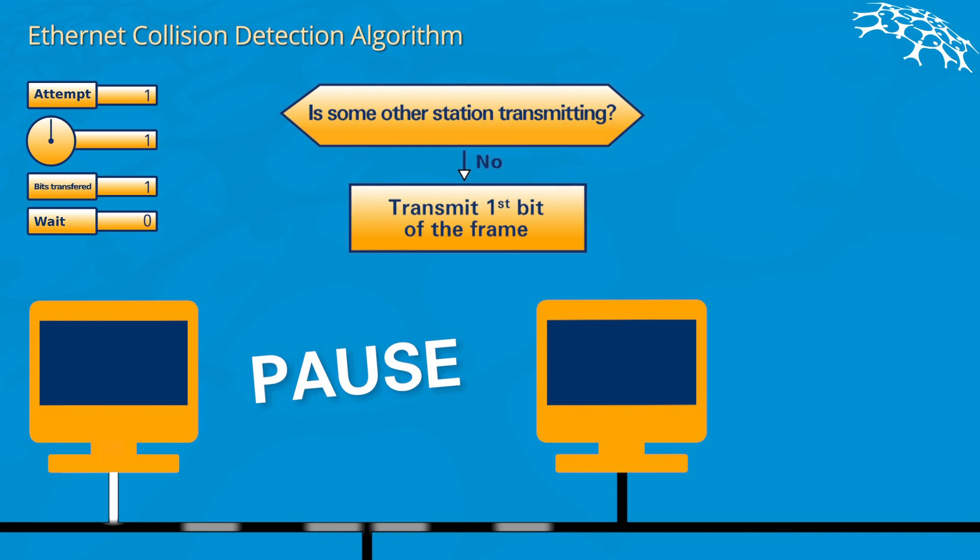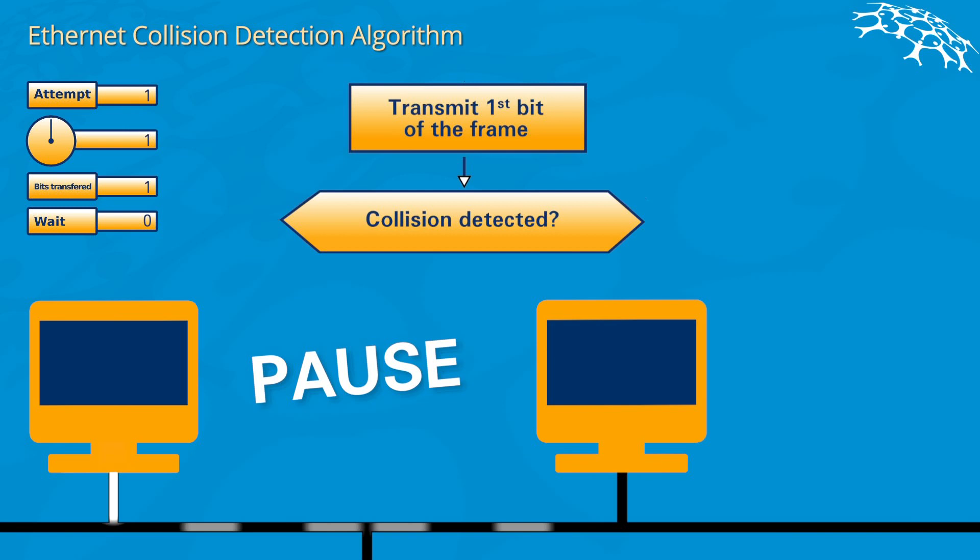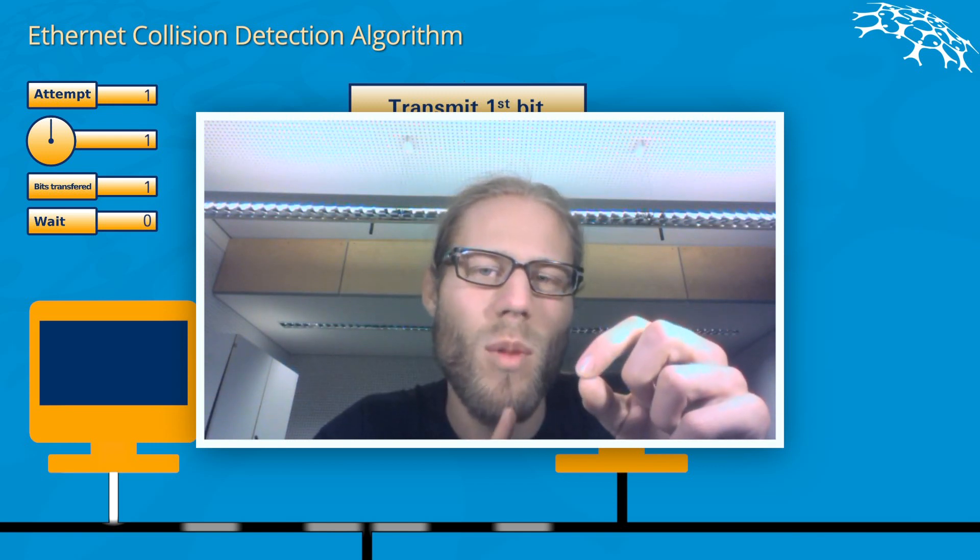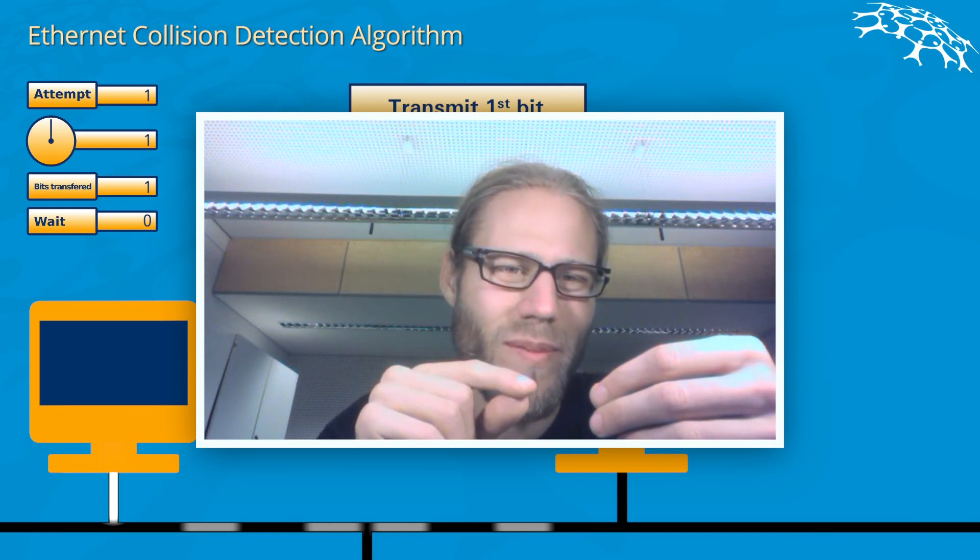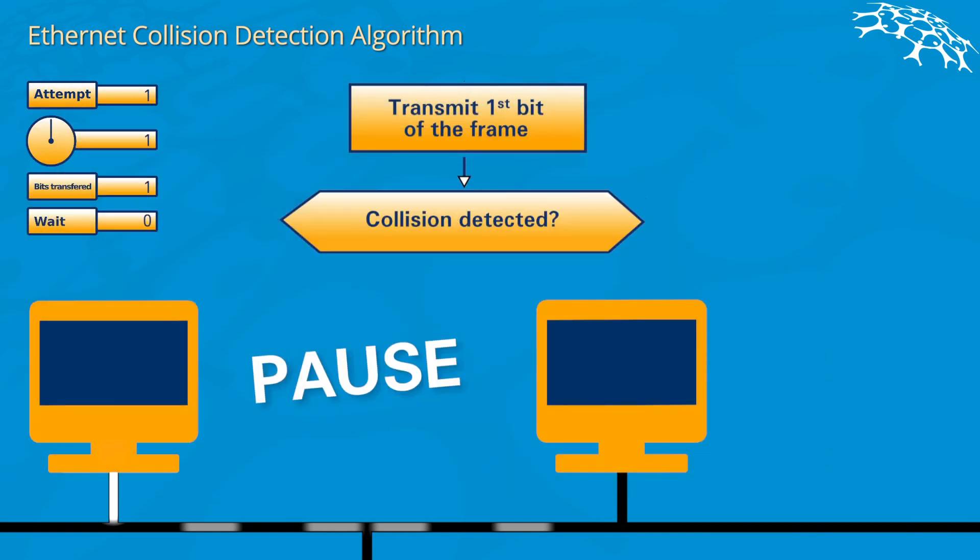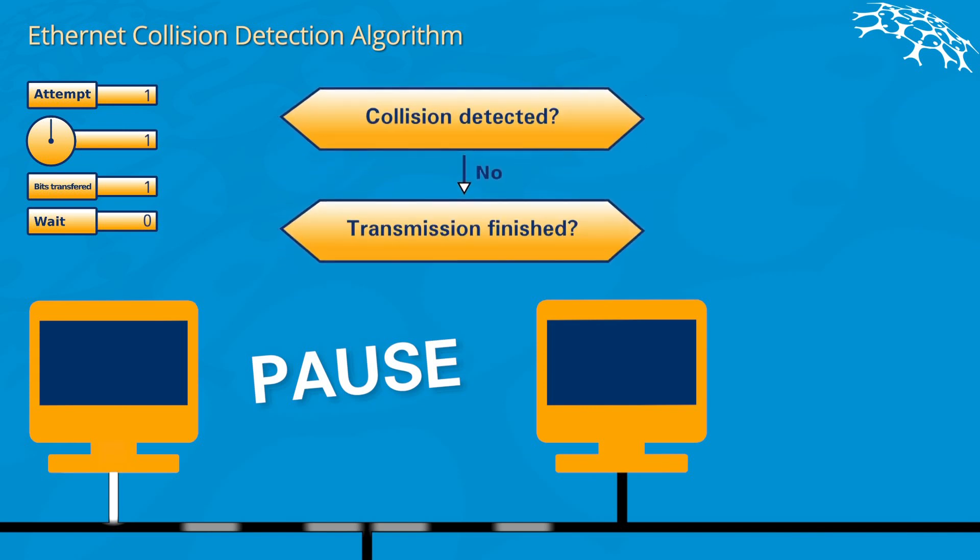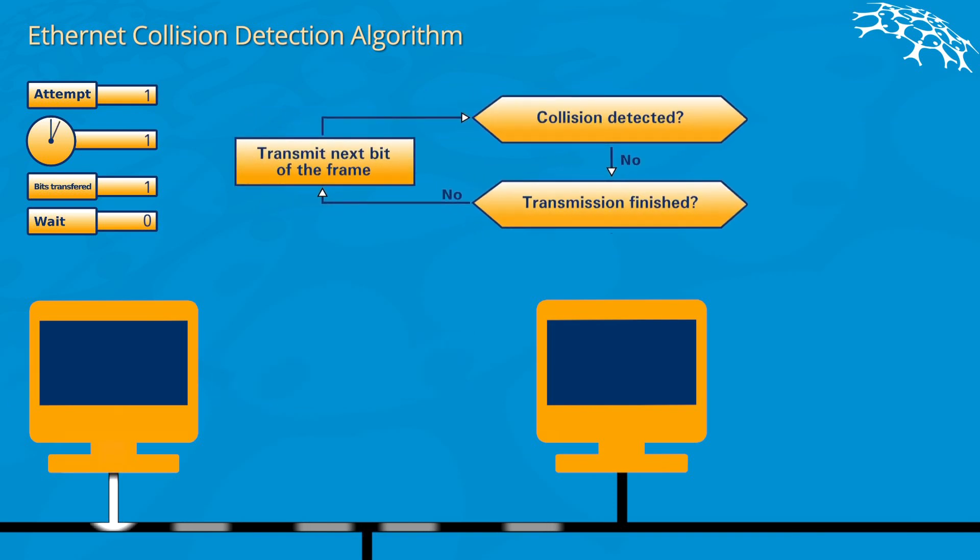We ask ourselves: do we detect a collision? Collision means to receive data at the same point in time where we actually transfer data. As you can see, the answer will be no because there is no collision yet that we can measure at our computer. So you go to the next step of the diagram and ask yourself: am I finished? At this point in time, the clock counter is at one, and we have one bit transmitted or put on the wire. Now we will send the next bit, which will be zero. In our model, we assume that sending a zero means don't put any voltage on the cable.